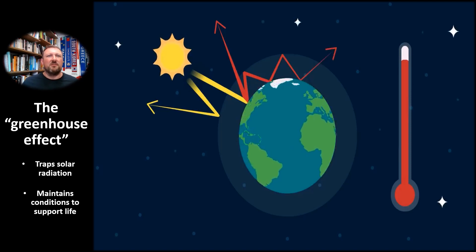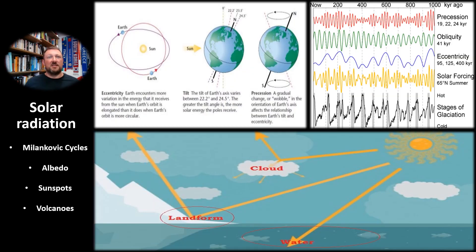The greater the concentration of greenhouse gases, the more effective this blanket layer is at trapping heat in the atmosphere, and thus the hotter it gets. As we've seen from climatic and fossil records, global mean temperatures do vary cyclically over geological and historical timescales, and this happens for a number of reasons.